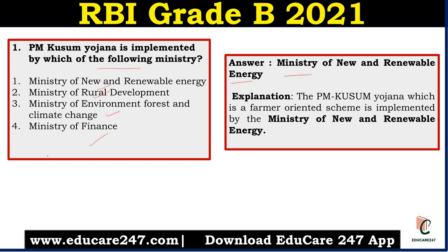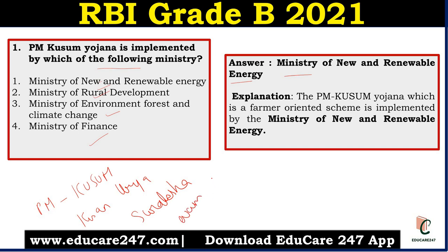This scheme provides additional income to farmers by giving them the option to sell additional power to the grid through solar power projects set up on their land. PM Kusum Scheme can be the ultimate game changer for energy security and the rural economy in India. The full form is Kisan Urja Suraksha Evam Uttam Maha Abiyan. It is implemented by the Ministry of New and Renewable Energy and is a farmer-oriented scheme.